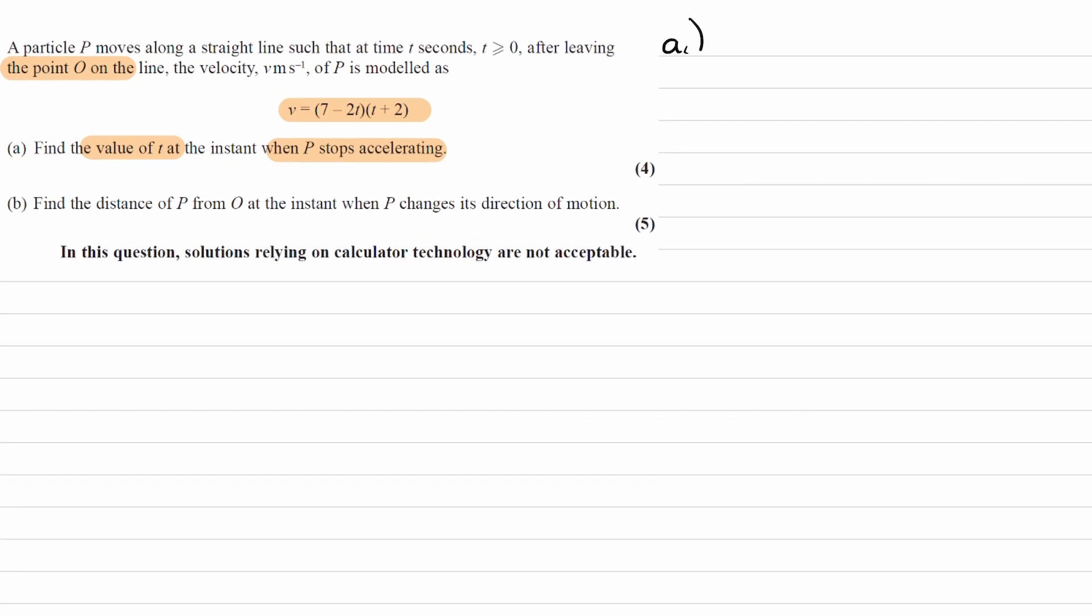For part A, we want to work out what is t when acceleration is 0. Acceleration is the rate of change of velocity, so dv dt.